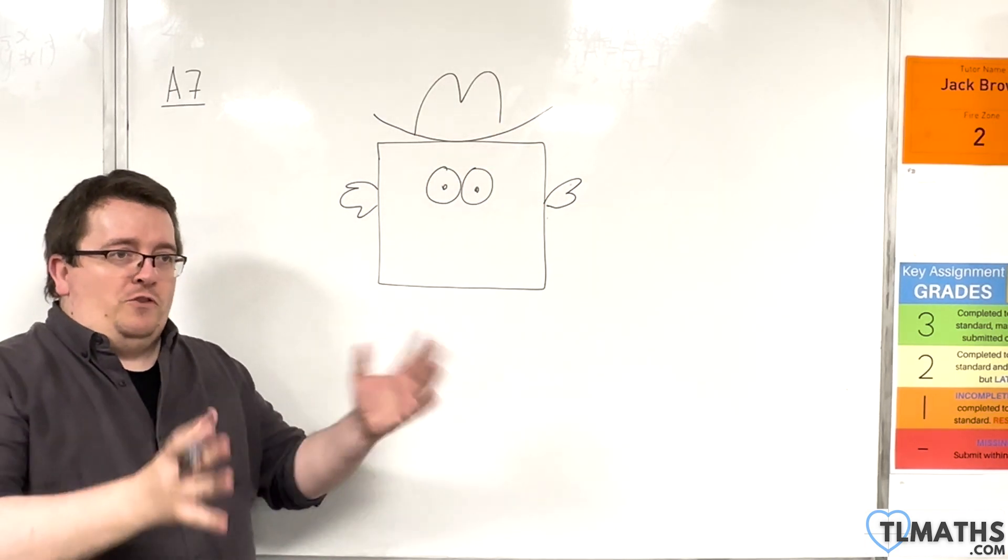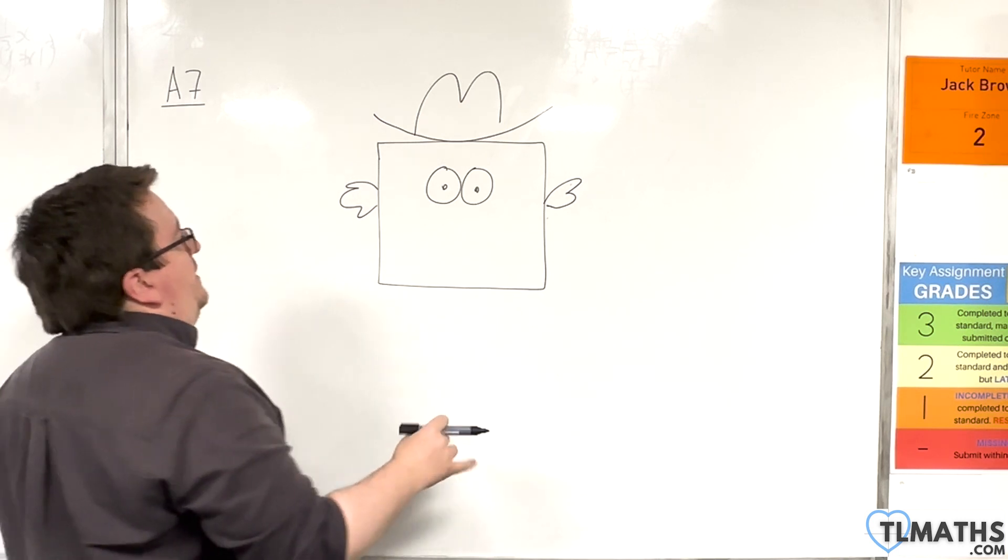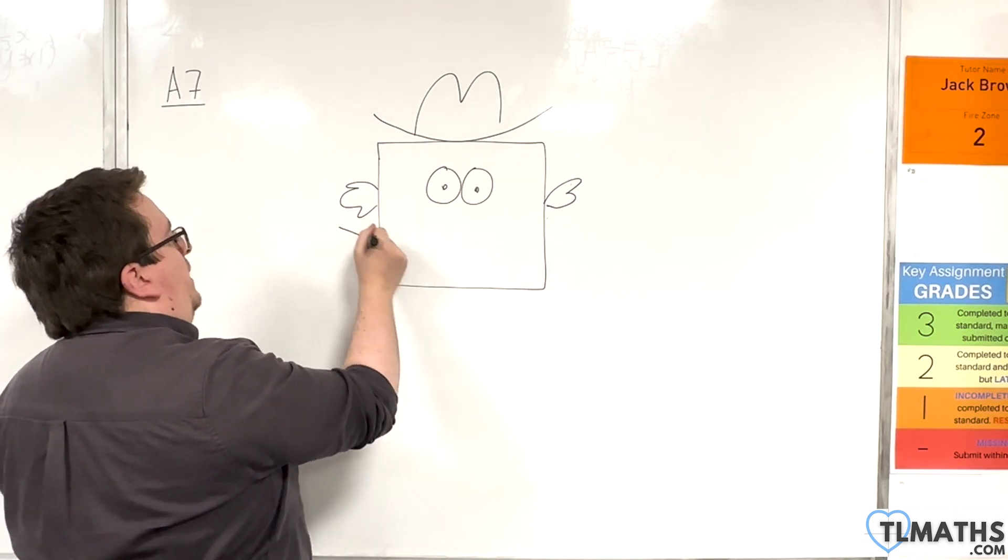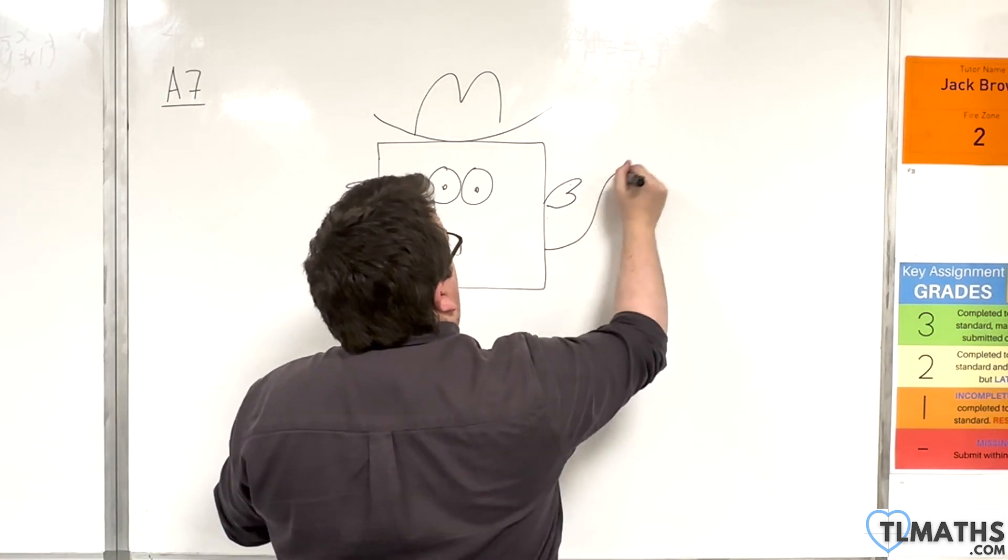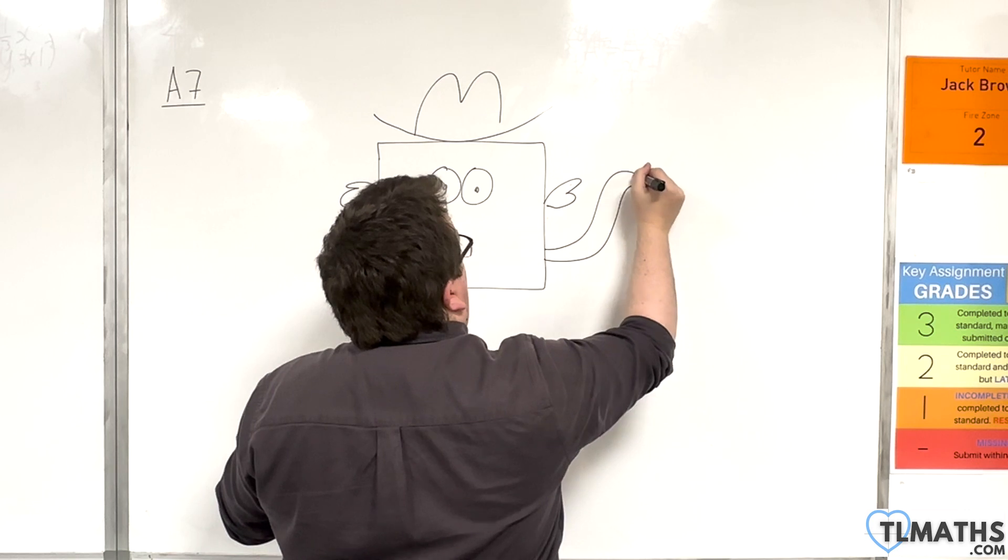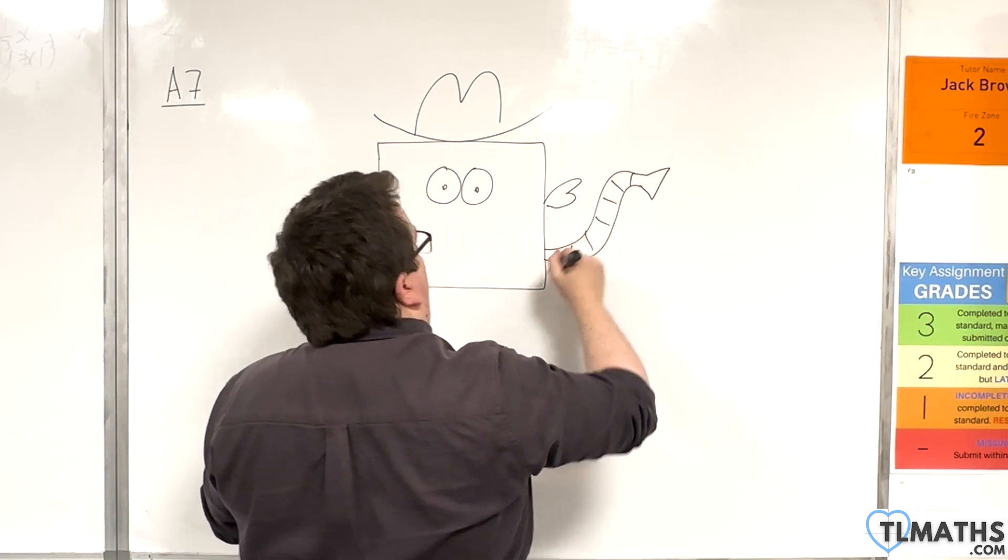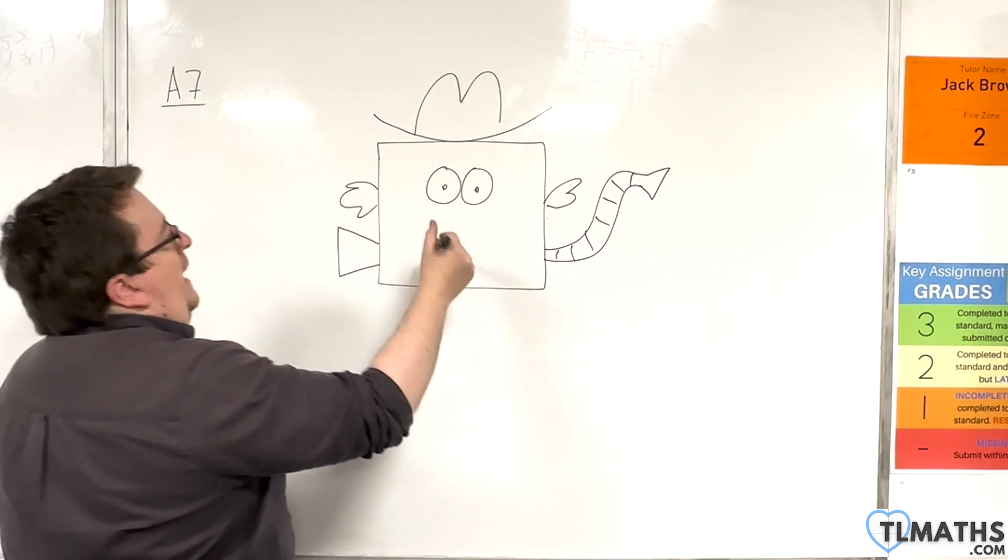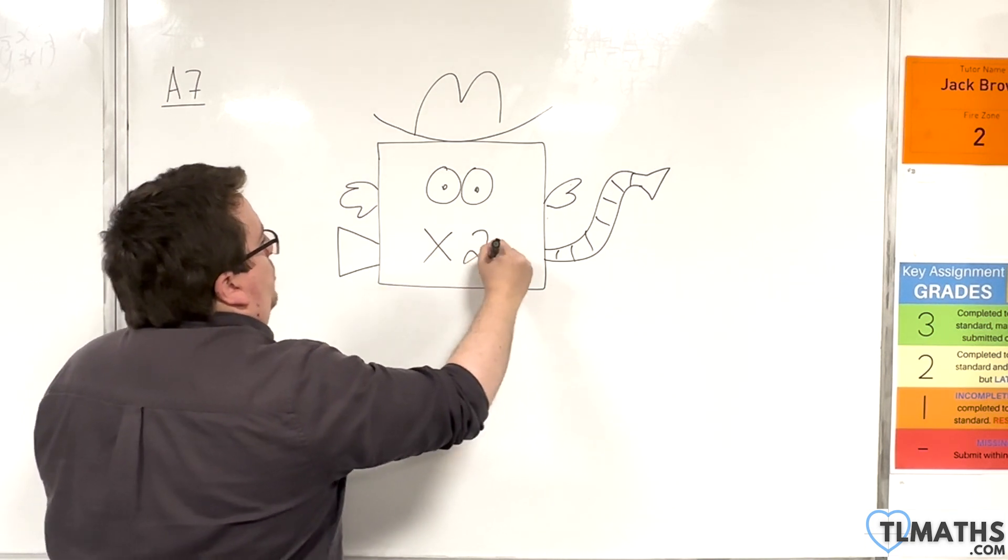You might be wondering, where is this going? But all it is, is this idea that you are inputting a number in, and then you are getting a number out. So maybe something like this. And all the function machine is doing, it may be multiplying by two, for example.